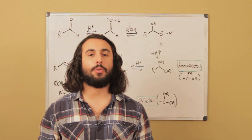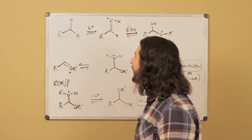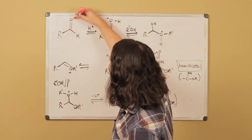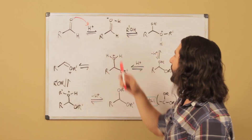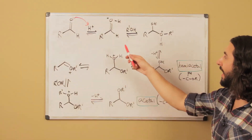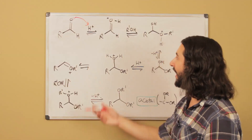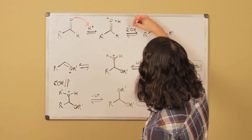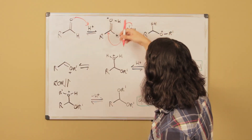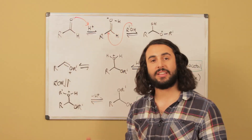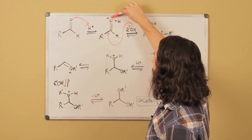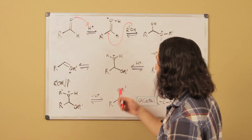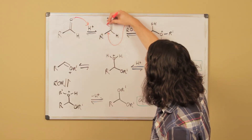Let's take a look at some interesting aqueous equilibria. Let's say we have this aldehyde right here. What can happen is this carbonyl oxygen can protonate. Now let's say we have some alcohol in solution — we've got this aldehyde in acidic conditions and some alcohol. This alcohol can attack right here because this carbonyl carbon is very electrophilic, and it also has a formal positive charge on the oxygen.